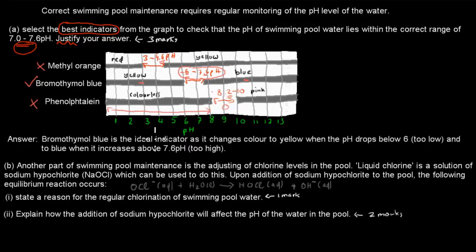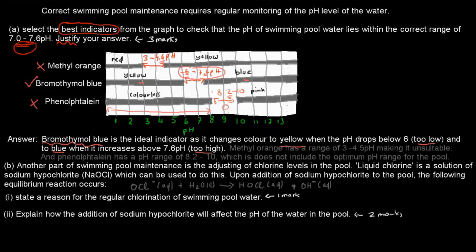Bromothymol blue is the ideal indicator as it changes color to yellow when the pH drops below 6, so when it's too low, and to blue when it increases above 7.6. So blue when it's too high. And anything in between is usually pretty good for us, for the pool itself. So that was for the first part, but we also just have to state why it's incorrect as well. So why the other ones are incorrect. So methyl orange has a range of about 3 to 4.5 pH, making it unsuitable. And phenolphthalein has a pH range of about 8.2 to 10, which does not include the optimum pH range for the pool. So that's also not suitable.